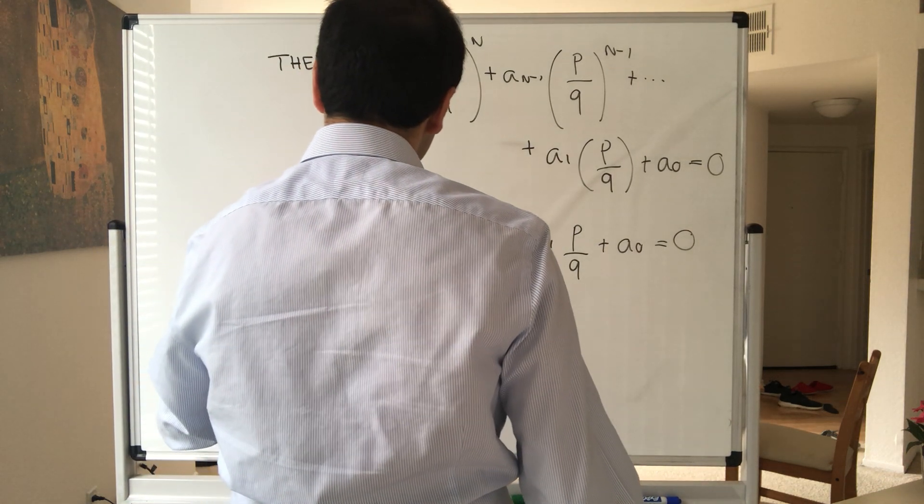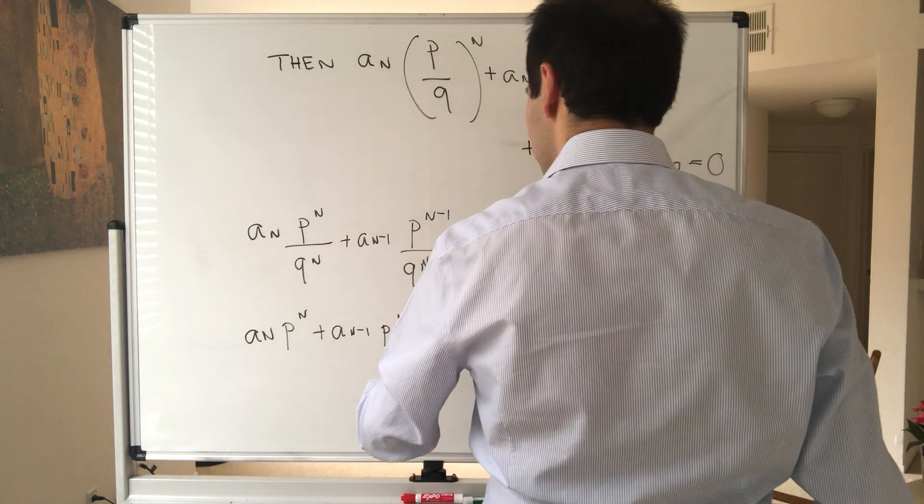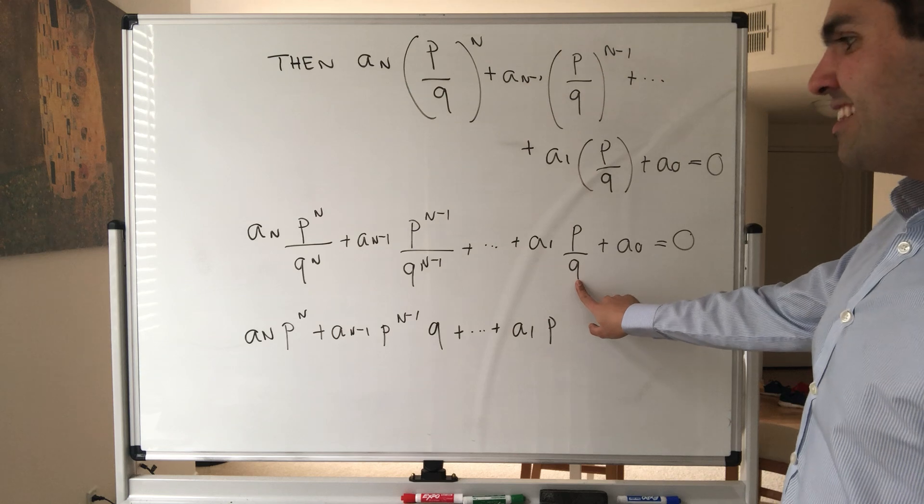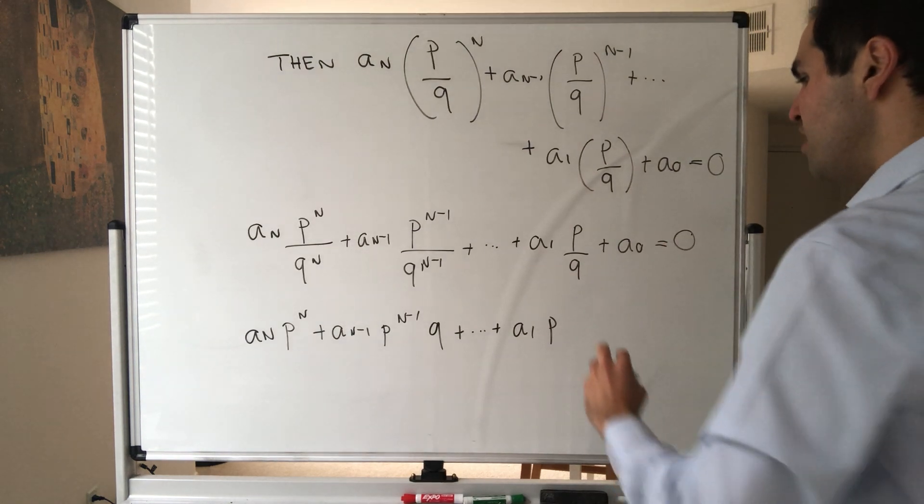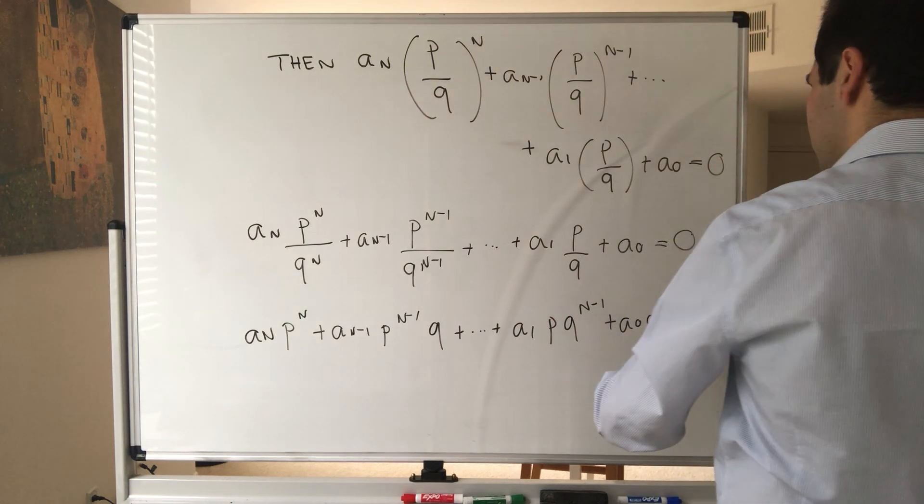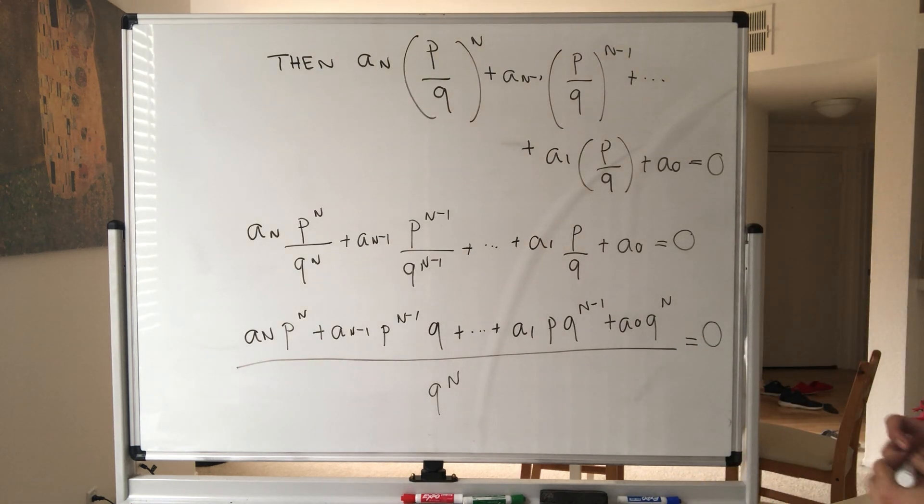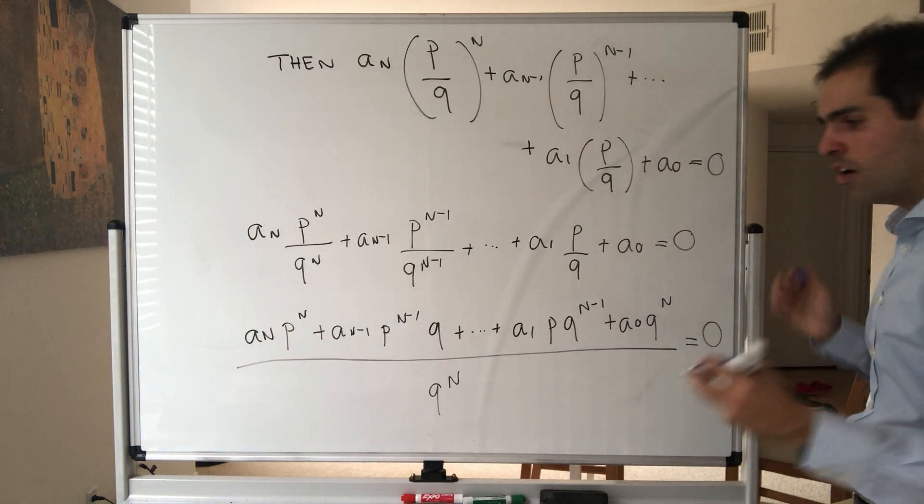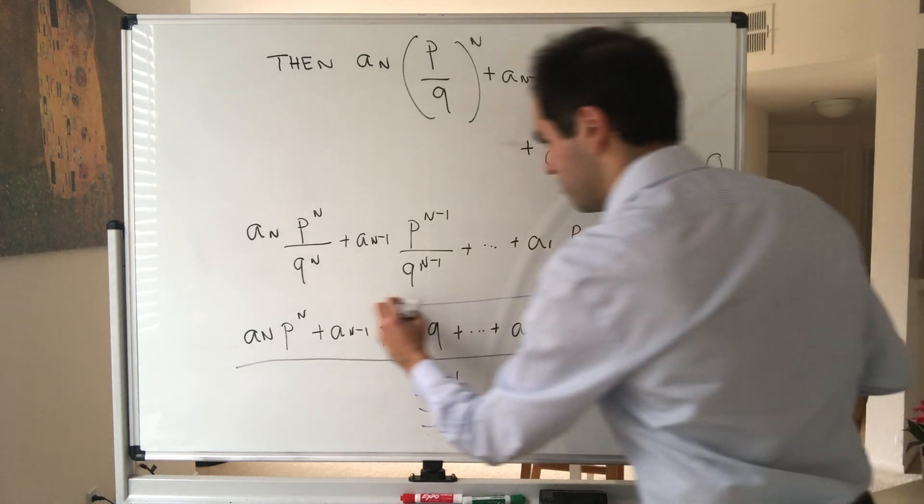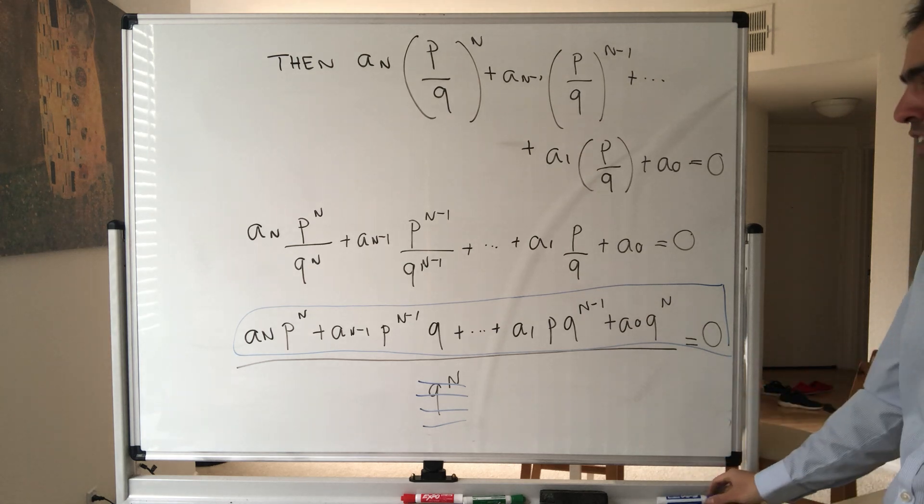And now let's put this on a common denominator. If you see, the common denominator is q^n, so really this becomes a_n p^n plus a_(n-1) p^(n-1). To complete this you need a factor of q, etc., a_1 p. In order to complete this to q^n, you need q^(n-1) more factors, and then a_0 q^n over q^n equals 0. And ultimately you get the following equation.